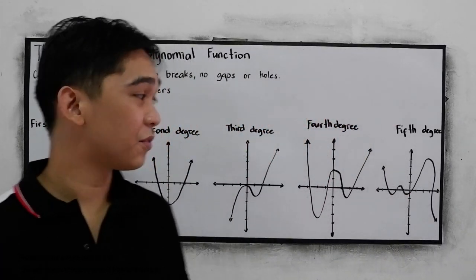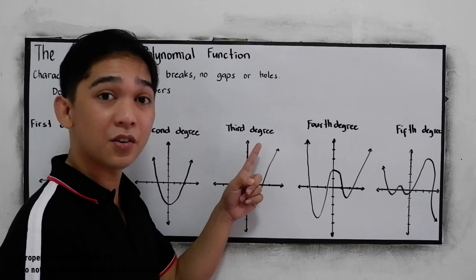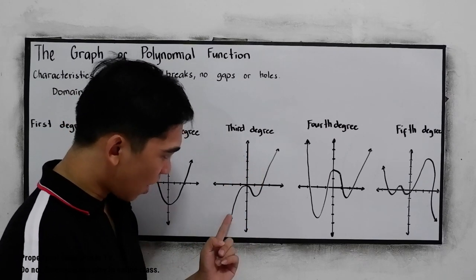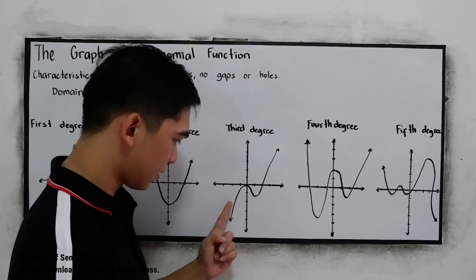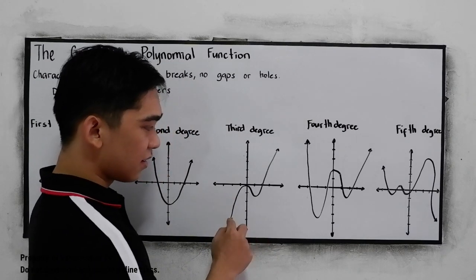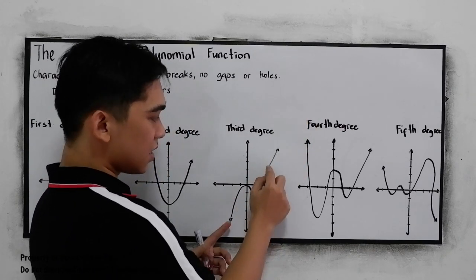And third, we have the cubic function. In the third degree, we have this form. Again, the graph is continuous. It can be extended.